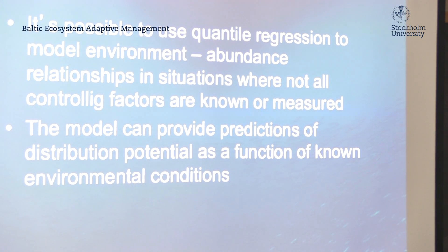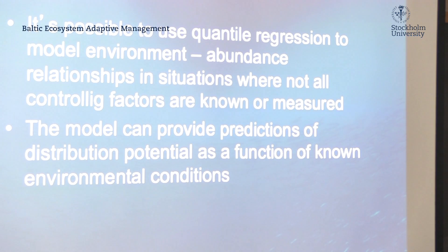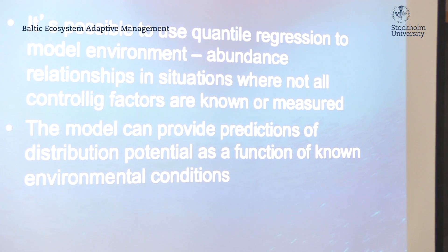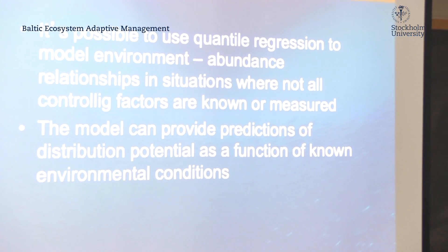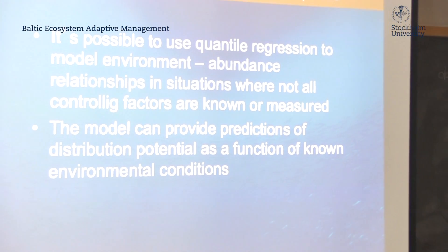The nice thing is that this regression system can model environment–abundance relationships in situations where not all controlling factors are known or measured — which is the most common situation. But these models don't provide predictions of expected spatial distributions; they provide predictions of potential distribution or potential habitat — the maximum distribution pattern you can observe.